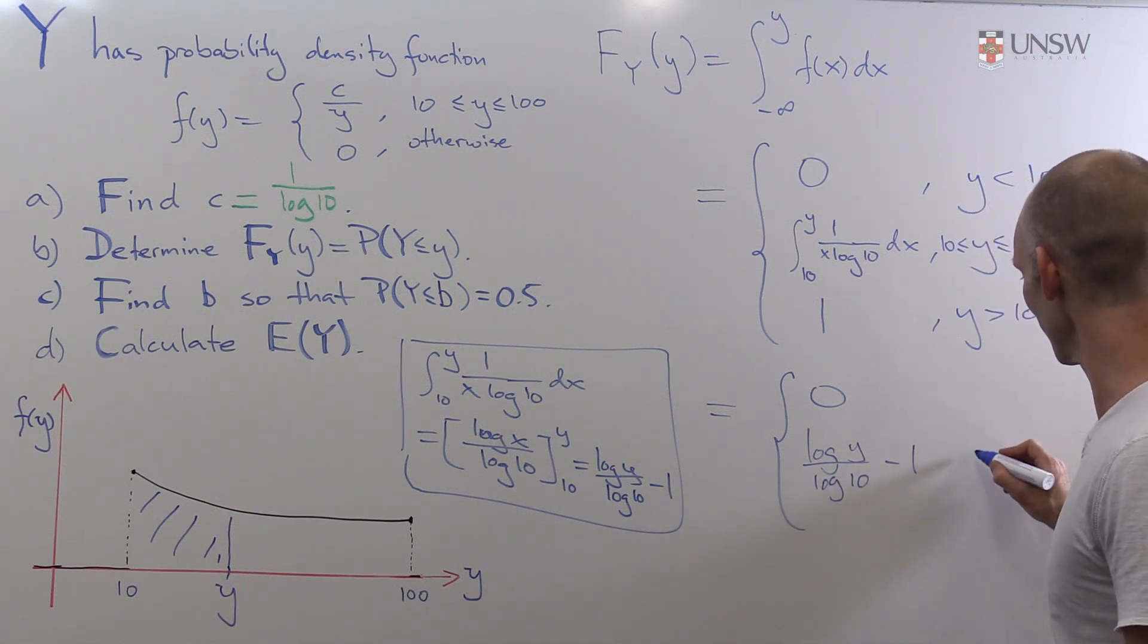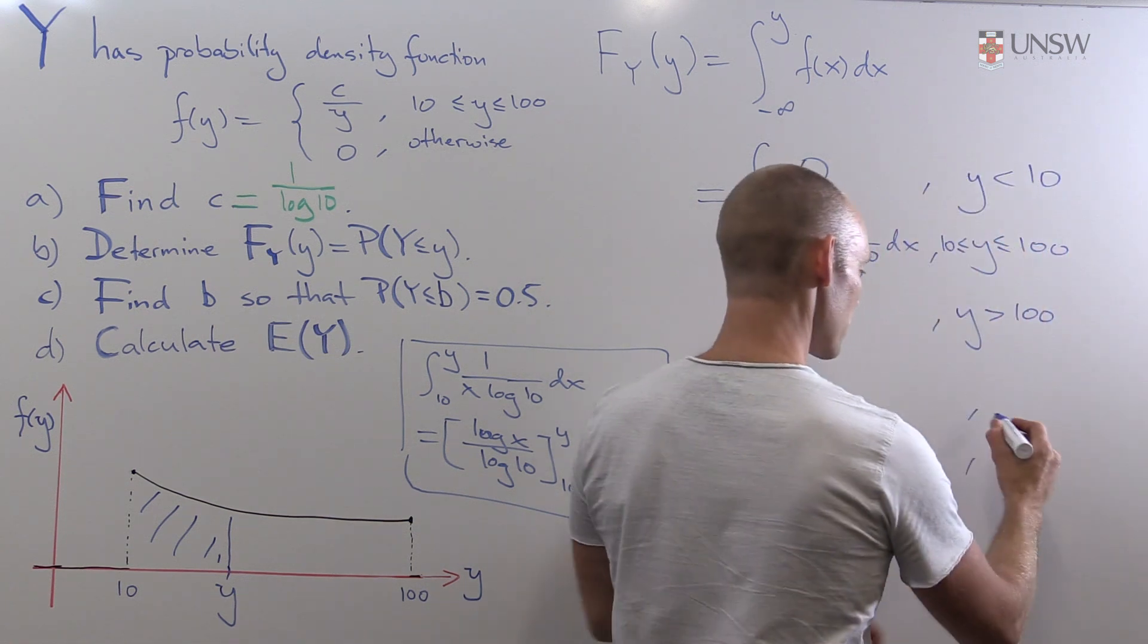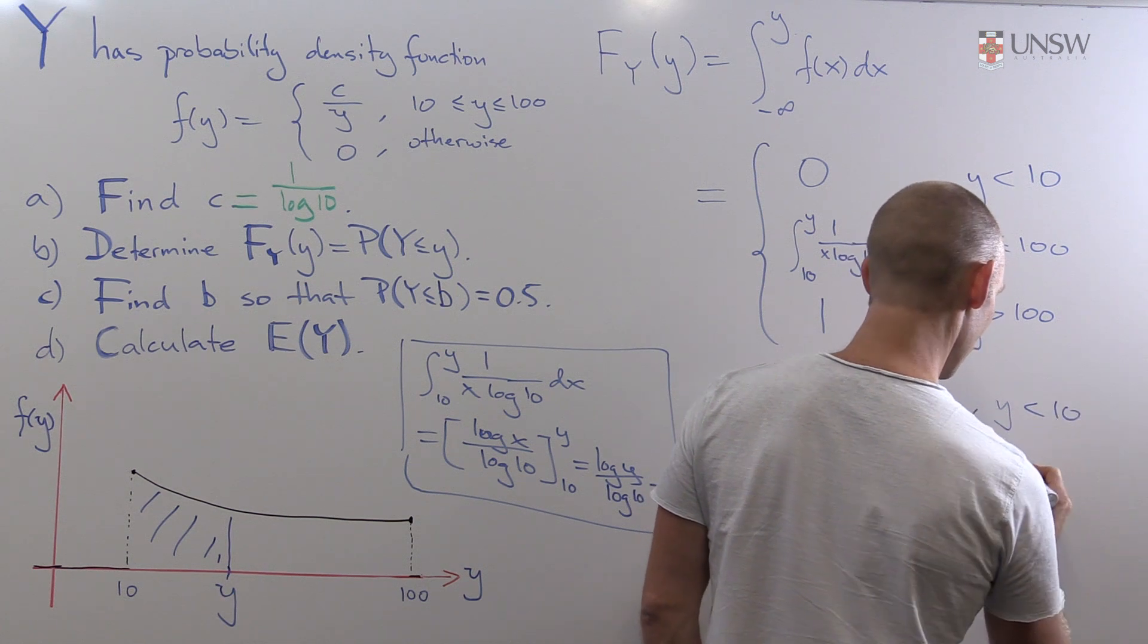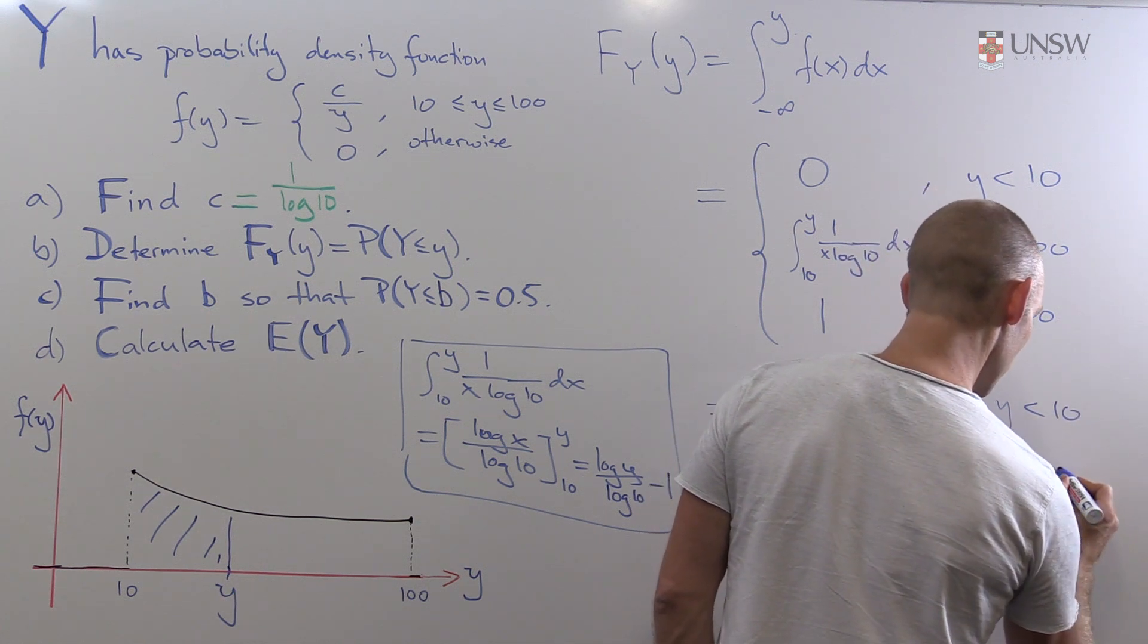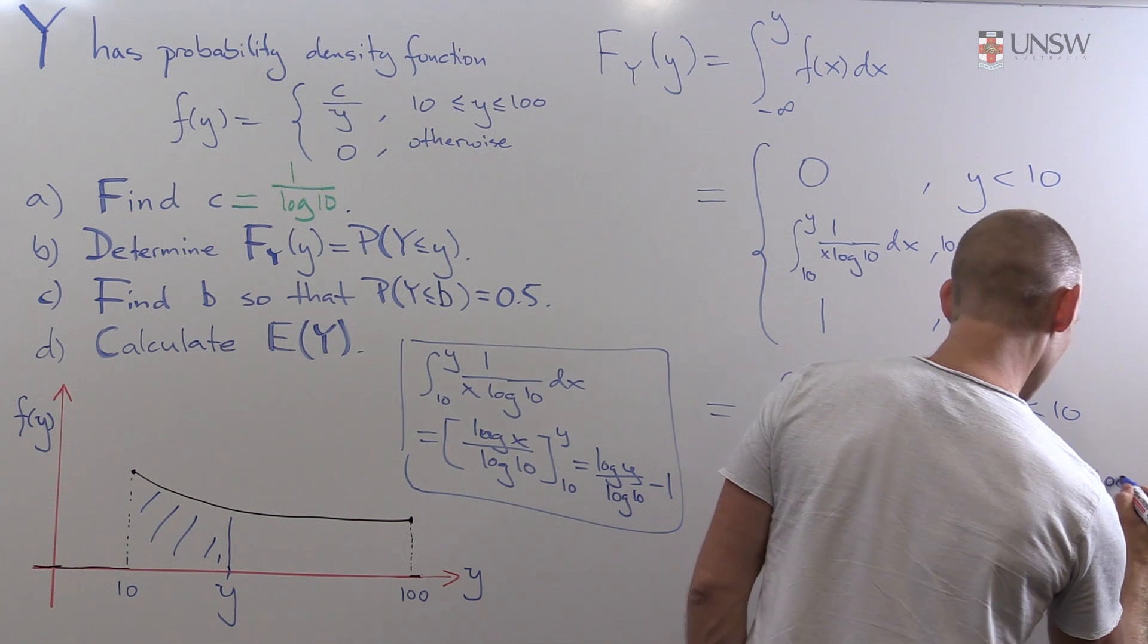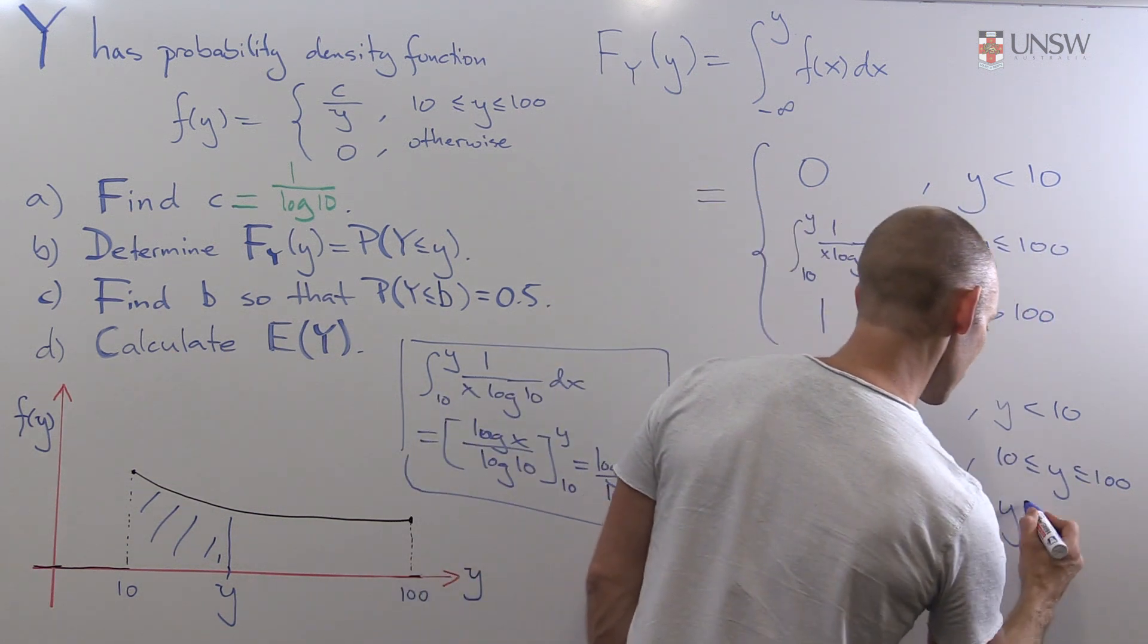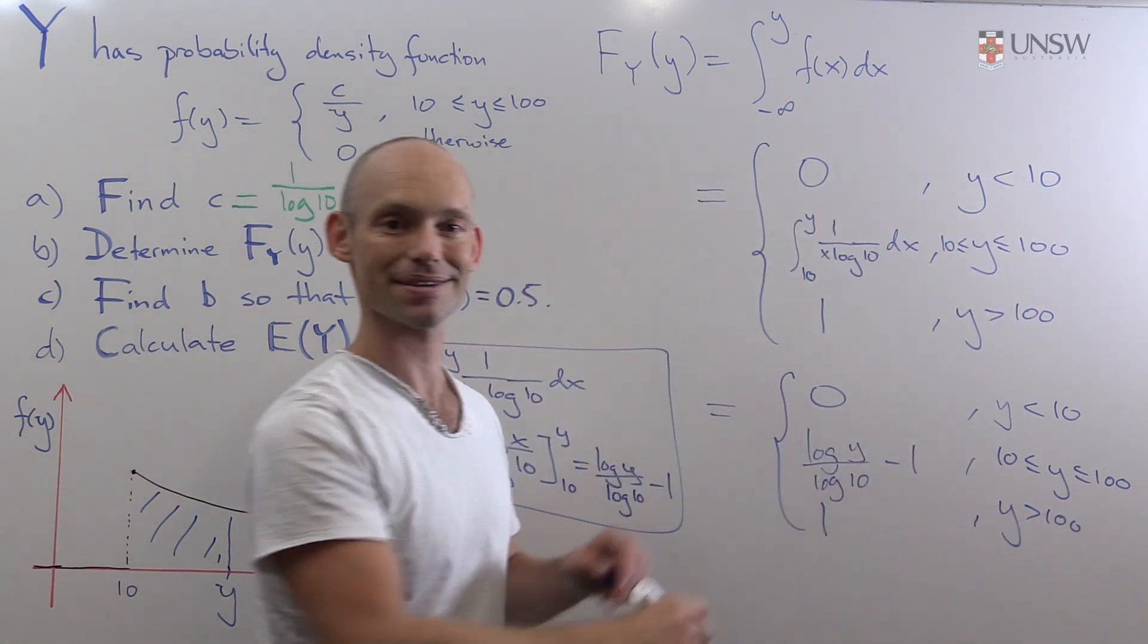And that's if y is between 10 and 100. Let's just write the first one as well. y is less than 10. y is between 10 and 100. And finally, we have just 1 if y is actually greater than 100. And that's the answer.